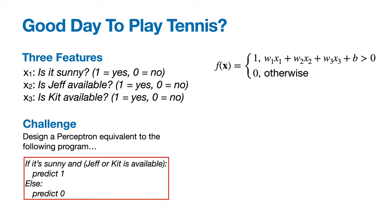Challenge: handcraft a perceptron for these inputs that's equivalent to the following program. If it's sunny, and Jeff is available or Kit is available, predict 1. Otherwise, predict 0.